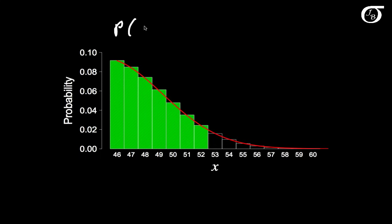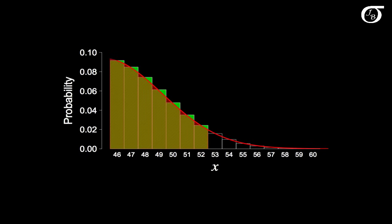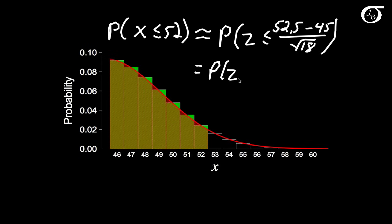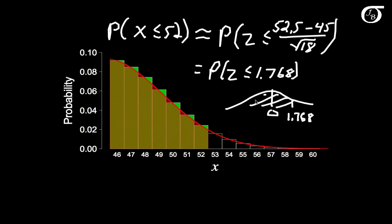For P(x ≤ 52), the shaded green region includes all of 52 going left. To include all of 52, I need to start at 52.5. With the continuity correction: P(z ≤ (52.5 − 45) / √18) = P(z ≤ 1.768) ≈ 0.9615.